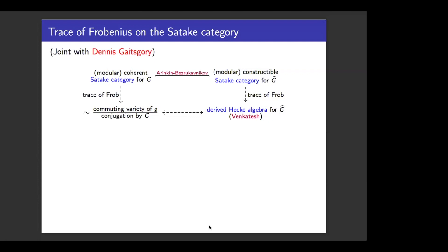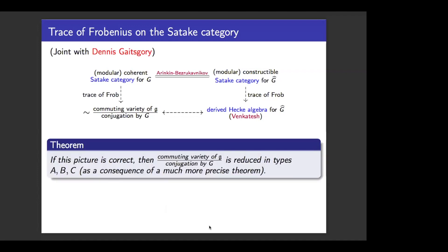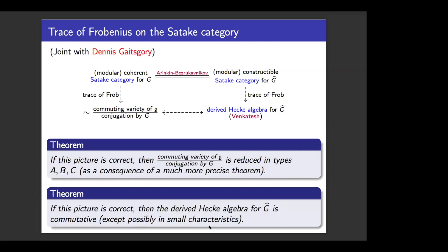These derivations of the trace are a bit heuristic right now — the heuristic predicts something precise, and I do expect it to be true, but there are technicalities to be addressed. Our perspective was that the category theory predicts what should be true: there should be some isomorphism of algebras on the bottom line, and then we should try to prove it by traditional methods. It wasn't obvious to us, and we have some evidence that it's hard. If our picture is correct, it implies that the commuting variety modulo conjugation is reduced, at least in types A, B, and C. And something fundamental that we don't know about the Dirac-Hecke algebra is that it's commutative — this picture almost immediately implies that it is, at least away from small characteristics.